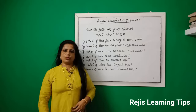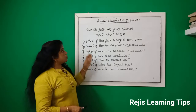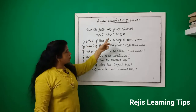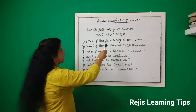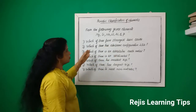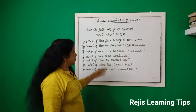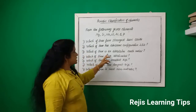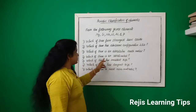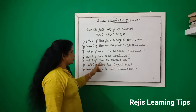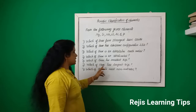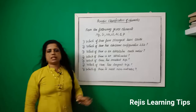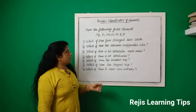Hi students, welcome back. Today we are going to discuss some extra questions from periodic classification of elements. From the following given elements — magnesium, silicon, sodium, chlorine, argon, sulfur and phosphorus — which forms the strongest basic oxides, which has electronic configuration 2,8,4, which is an alkaline earth metal, which is an alkali metal, which has smallest size, which has largest size, and which is most non-metallic?